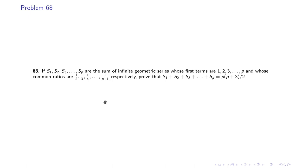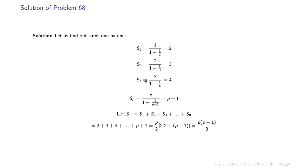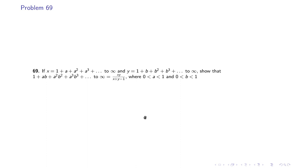Problem 68: If S₁, S₂, ..., Sₚ are the sums of infinite GPs whose first terms are 1, 2, 3, ..., p and whose common ratios are 1/2, 1/3, 1/4, ..., 1/(p+1) respectively, prove that S₁ + S₂ + ... + Sₚ = p(p+3)/2. We find S₁ = 2, S₂ = 3, and so on, with Sₚ = p+1. The series 2 + 3 + 4 + ... + (p+1) is an AP with first term 2 and common difference 1, giving the desired result.